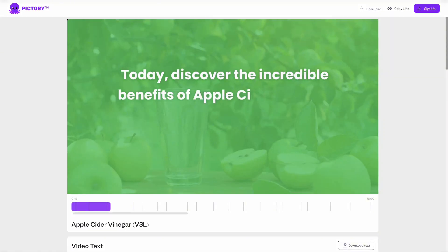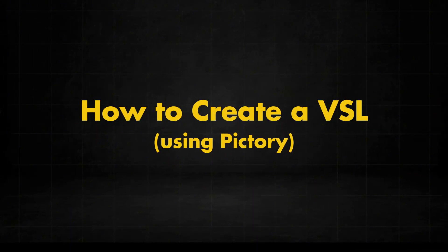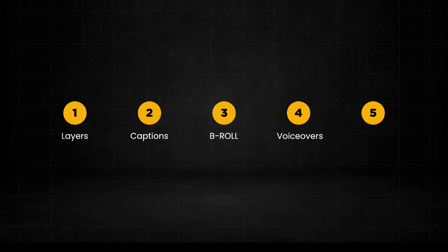In this advanced Pictory tutorial, I'll show you how to make a video sales letter or VSL using some of Pictory's new features. Let me show you how I did it. Here are the 5 things we'll learn today: we'll create an overlay layer using our brand colors, create animated text captions for the video, use AI to add b-roll clips to our scenes, choose an AI voiceover narrator, and finally I'll share some advanced tips to make your videos pop even more. Also, I put a link to the software I'm using in the description below along with the generous lifetime coupon code they gave us.